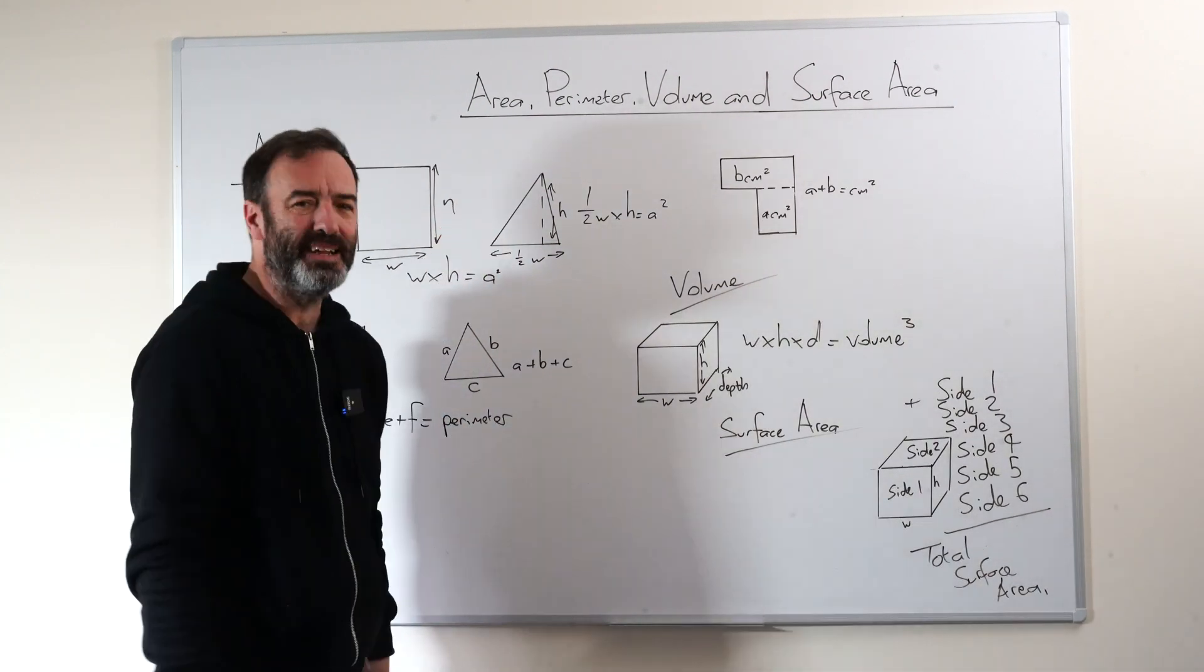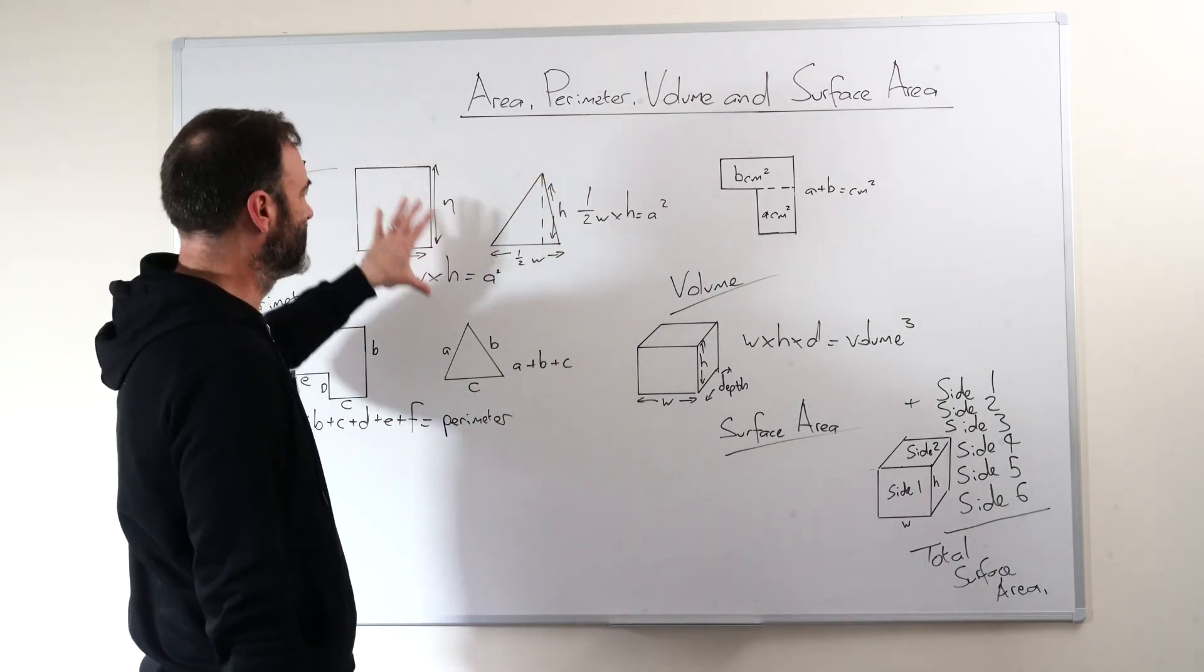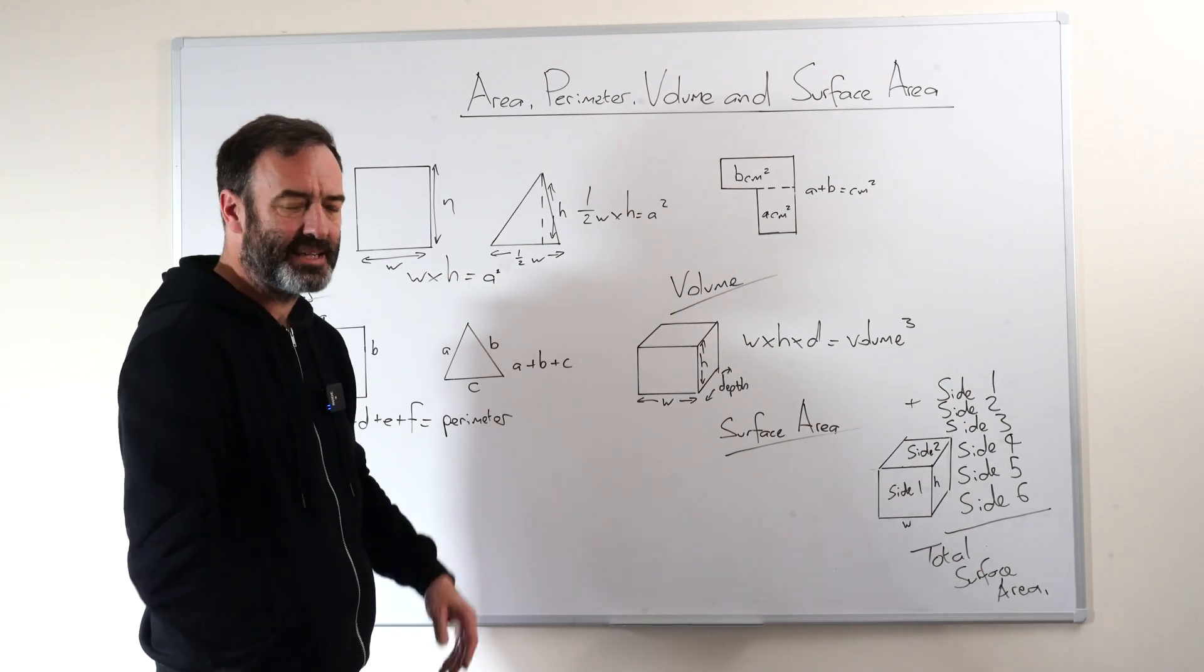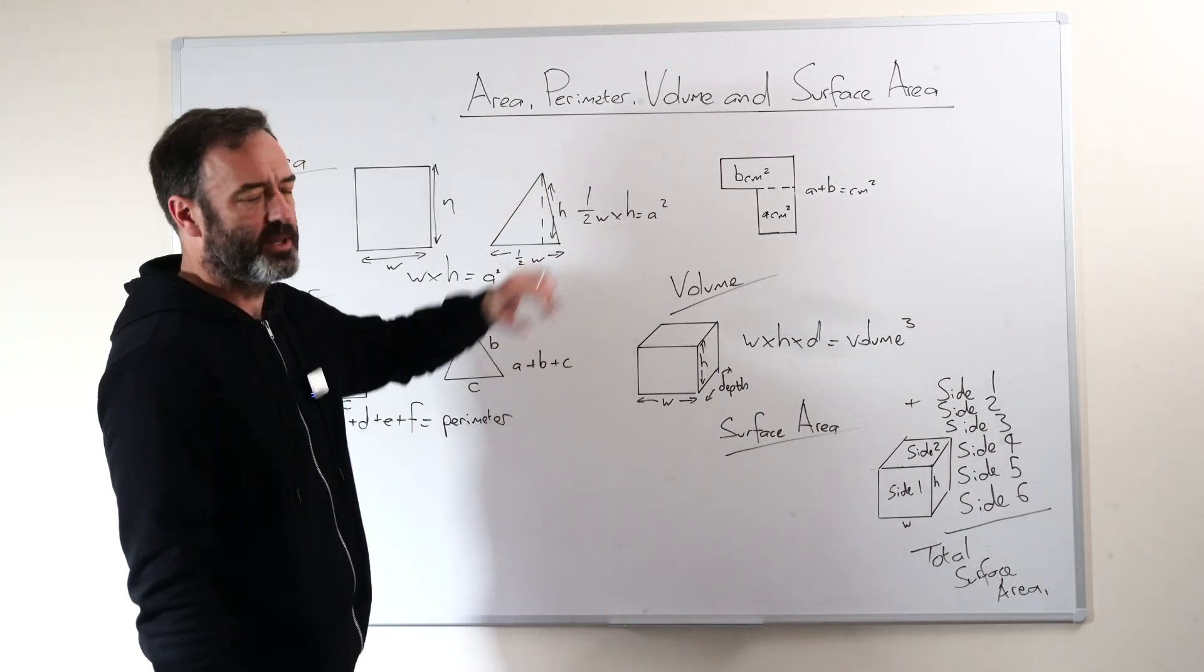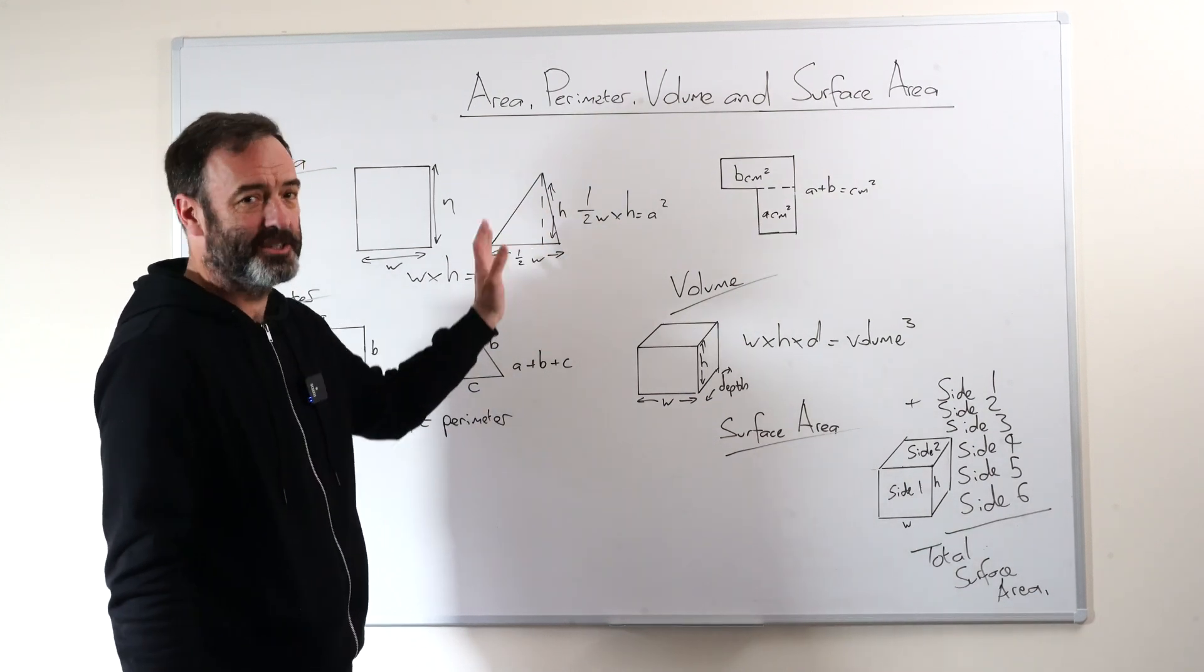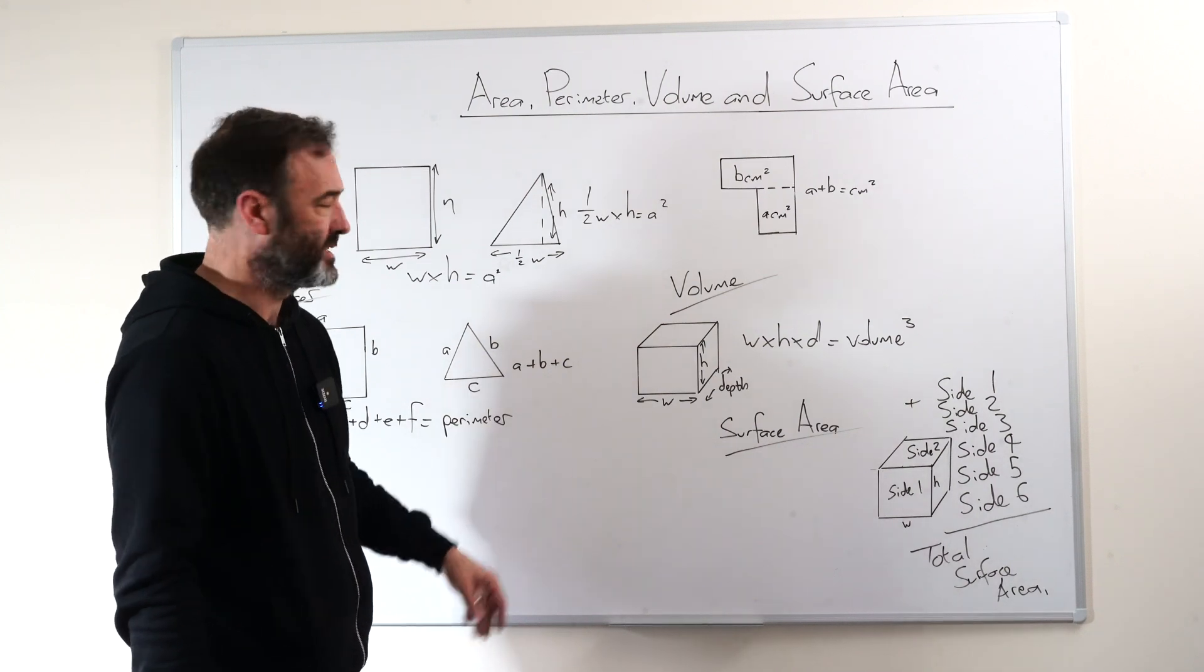For a triangle, it's a bit different. I would say to kids, the formula for this cannot be the same as this, it must be less. That helps them categorise it instantly. It's half the bottom times the height. Equally, half the height times the bottom works. But it's different to just a square or rectangle.